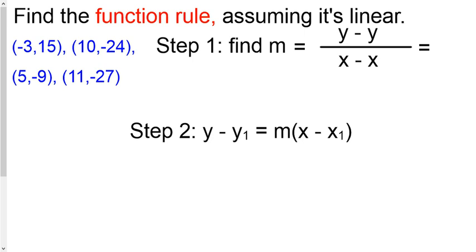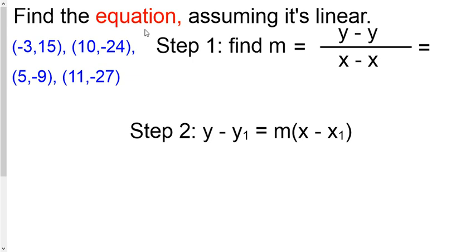So, find the function rule. Assume that it's linear. Don't let that freak you out there. Linear just means straight line. That's what we know in 8th grade. Function rule, that just means it's an equation. So, linear equation, slope-intercept form, that's what they want.